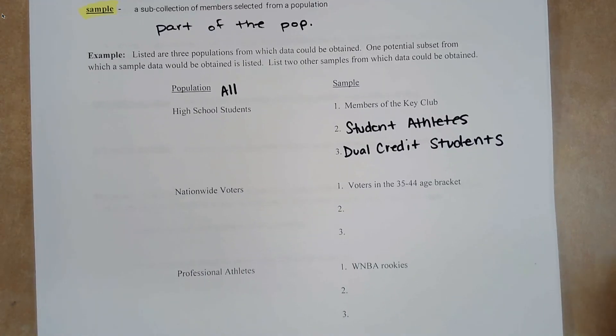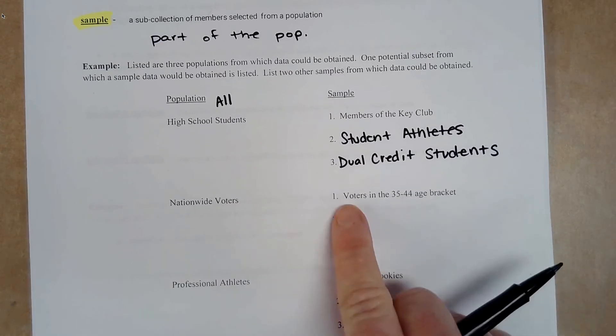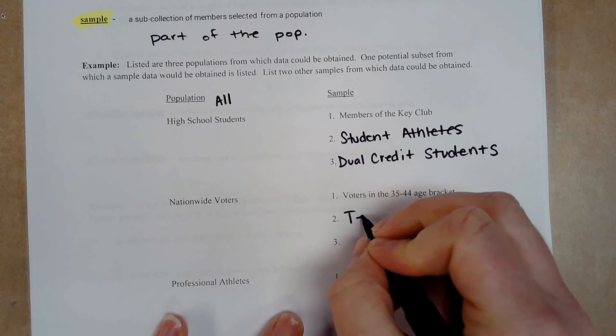Nationwide voters. So this would be all voters. From all the voters, we can create sample sets. So voters between the ages of 35 and 44. We could say Texas voters.